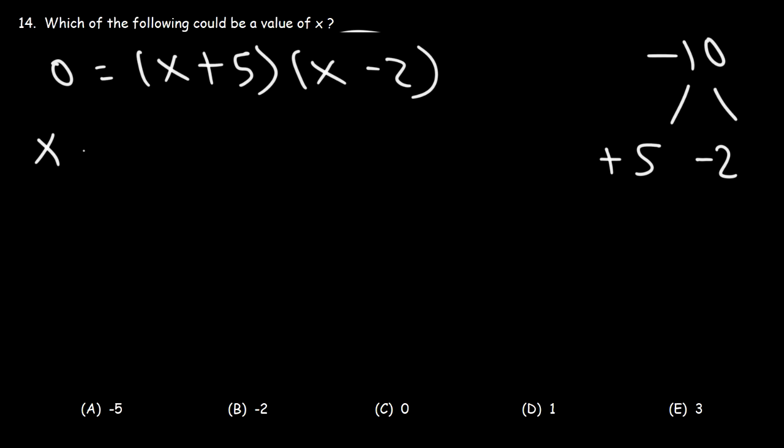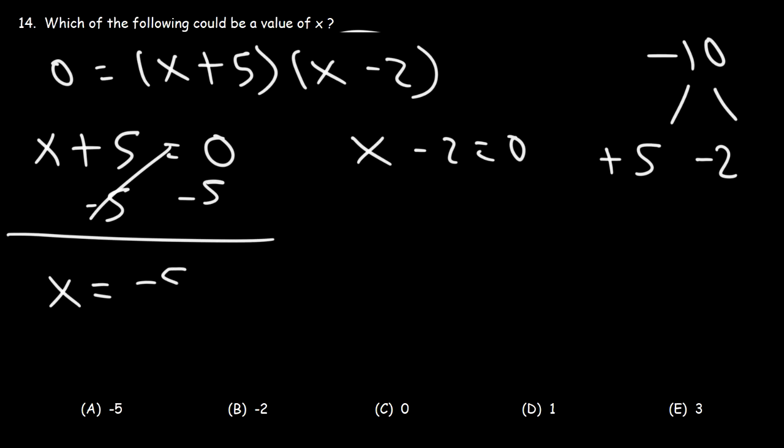So let's set each factor equal to 0. Subtracting 5 from both sides, we get the first solution, x is equal to negative 5. And for the other one, adding 2 to both sides gives us the other answer, x is equal to 2.